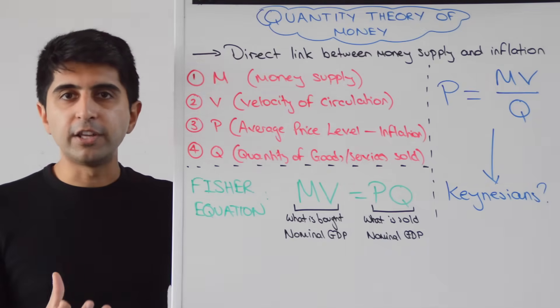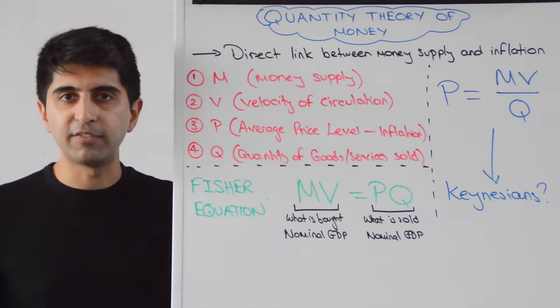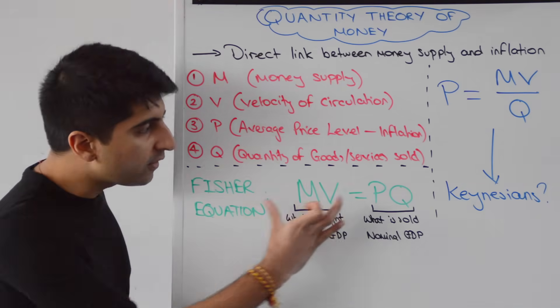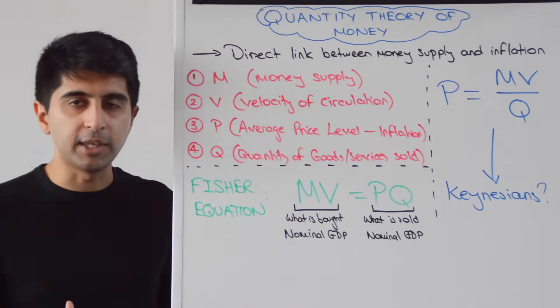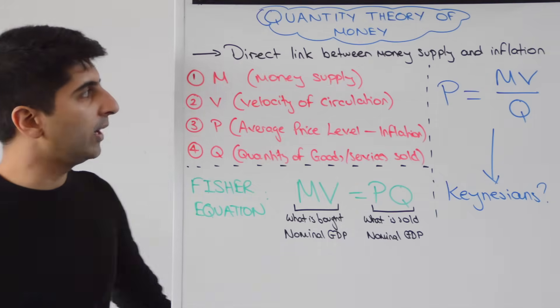They will use the Fisher equation as the premise to explain this link between the money supply and inflation. We need to build to this Fisher equation where MV equals PQ. Let's do so by first understanding the different variables in this equation.